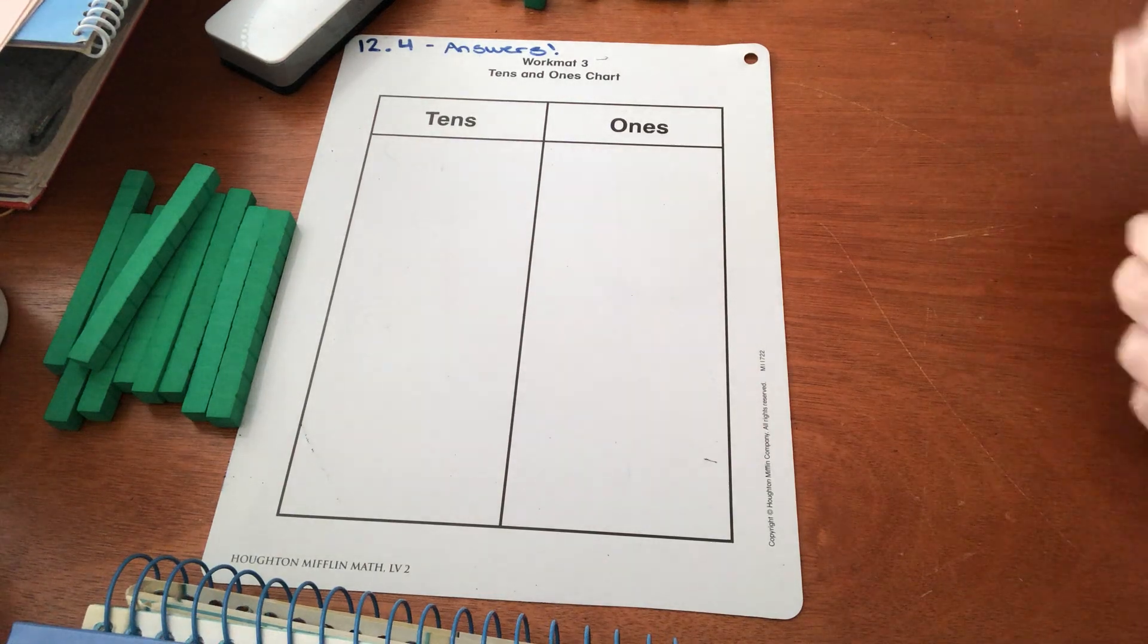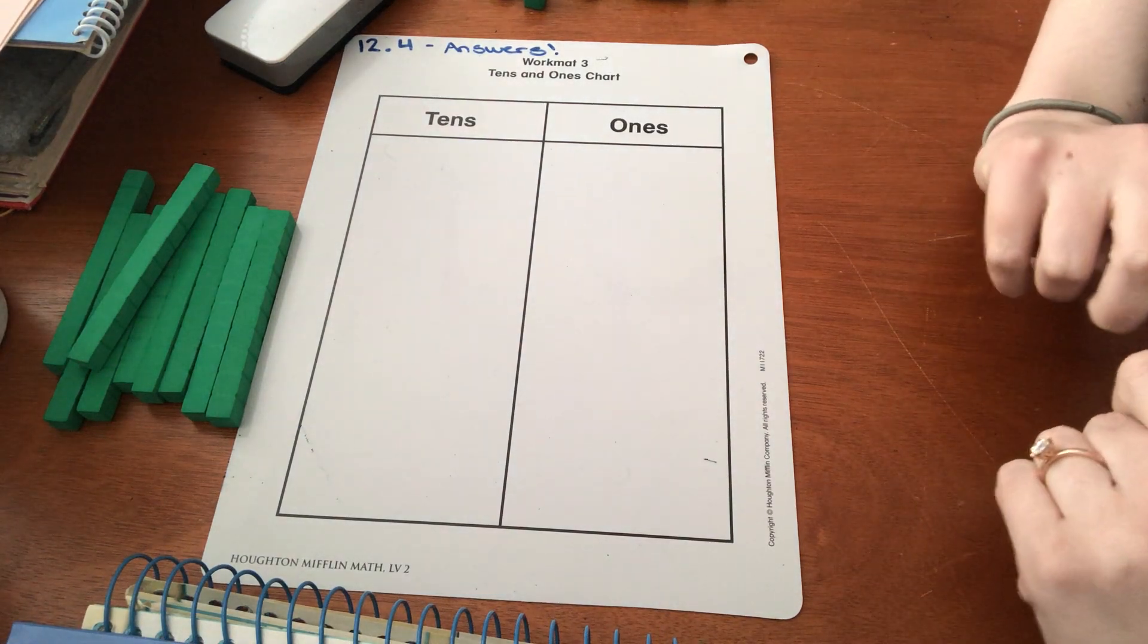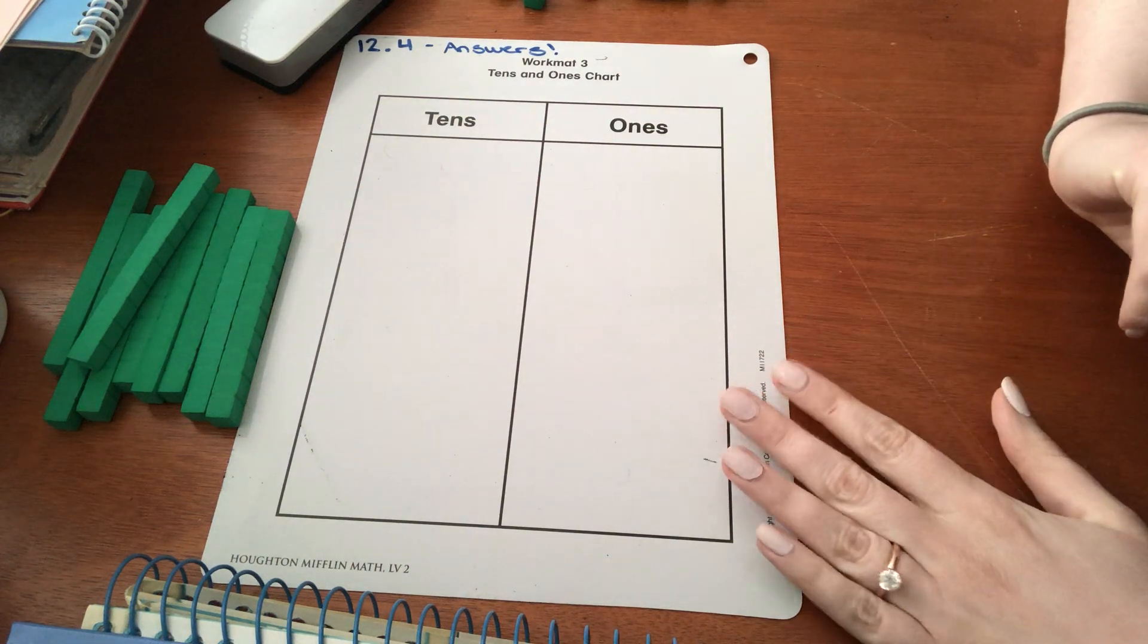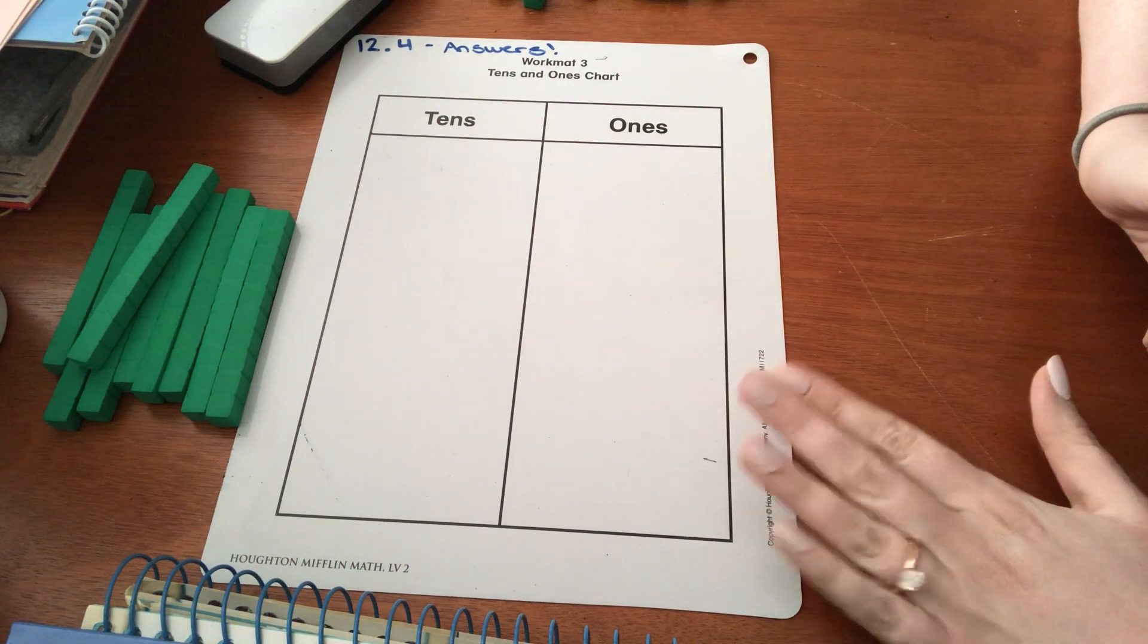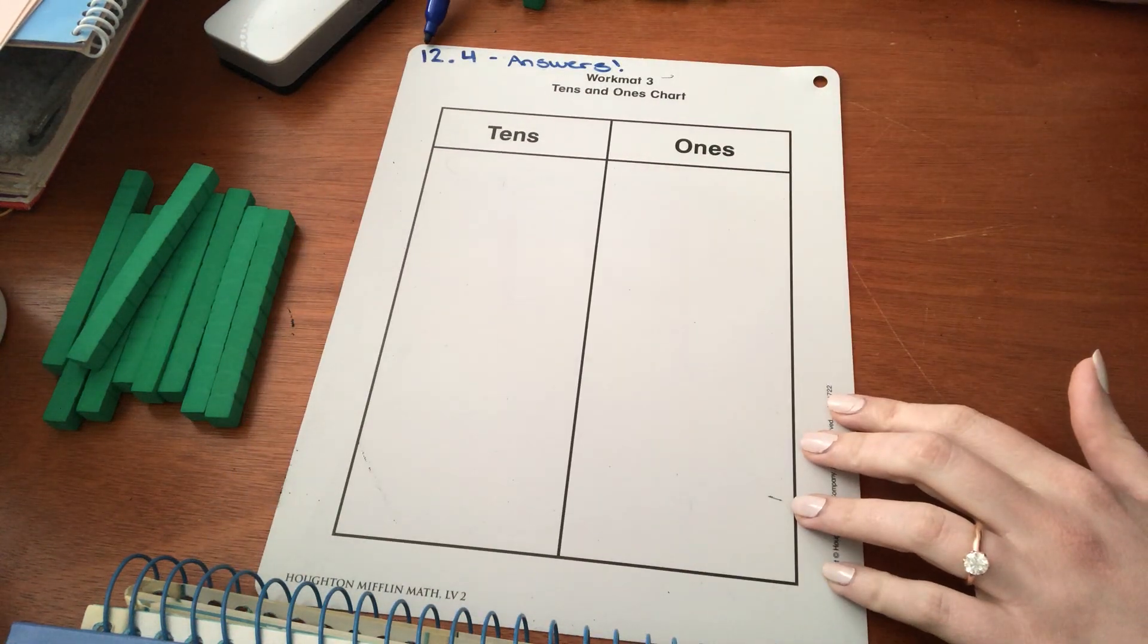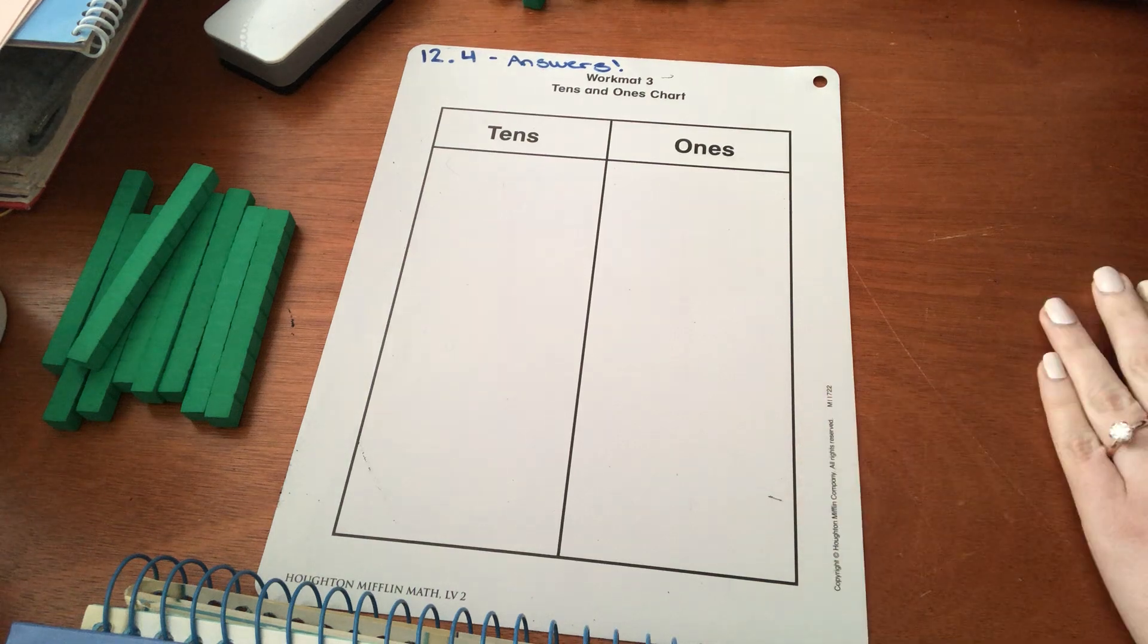Hi everyone, it's Miss O'Neill here. For our math lesson today, we are really quickly going to go over the rest of the practice book page that I had you work on yesterday. We are on the practice page for 12.4, deciding when we need to regroup.